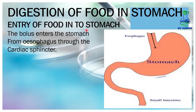The first function is the entry of food into the stomach. The bolus enters the stomach from the esophagus through the cardiac sphincter, which is the muscular opening connecting the esophagus with the stomach.